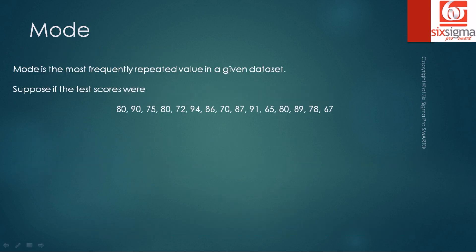The last one in the series is mode. Mode is the most frequently repeated value in a given data set. Suppose the test scores in our example were like this. By looking at this data, we see that there is a particular number which has been repeated three times, and that number is 80. Therefore, our mode is 80.